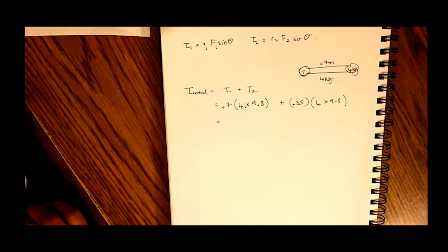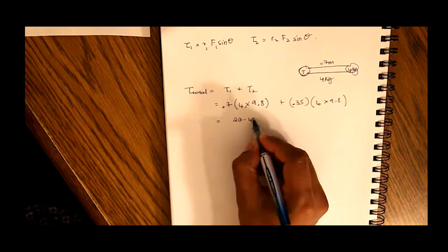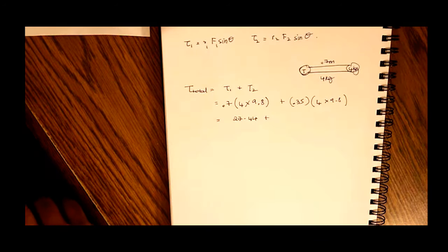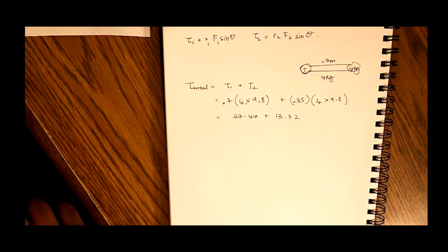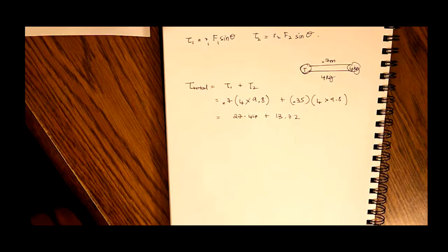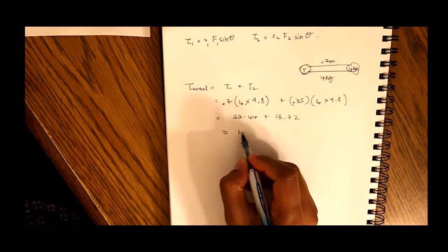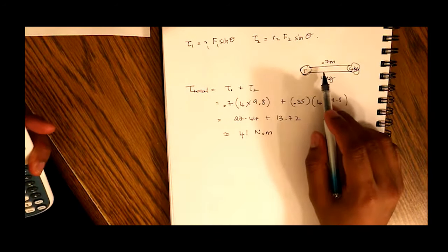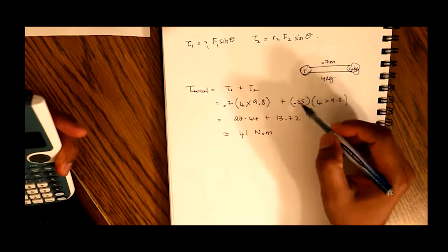So 0.7 times 4 times 9.8 is 27.44. Plus 0.35 into 4 into 9.8 is 13.72. You add these two together, and what do we get? So our total torque is approximately 41 newton meters when he is extending his arm out straight. That means the sine of theta is 90.